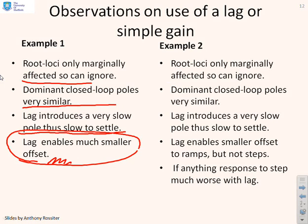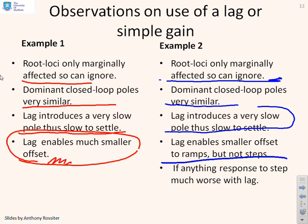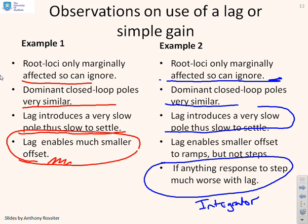Now, what about example two? Again, the root loci only marginally affected in the key part. So the dominant closed loop poles are very similar. Again, you'll see the lag introduced a very slow mode. So it was slow to settle, albeit the transients were the same. However, if you looked at step responses, with the lag, things were much worse. And that's because this example included an integrator. And so because it included an integrator, you didn't need a lag to reduce the offset. The offset was already zero. And so by introducing the slow mode, you've made things worse.